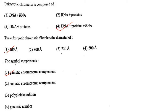Next one: Eukaryotic chromatin is composed of option 1, DNA plus RNA; option 2, RNA plus proteins; option 3, DNA plus proteins; option 4, DNA, proteins plus RNA. Answer is option 4: DNA plus proteins plus RNA.